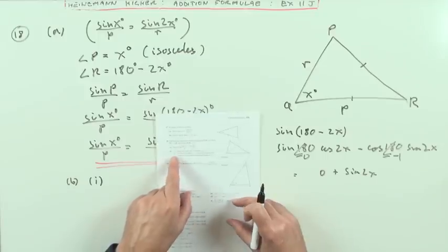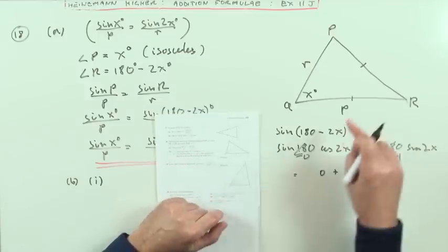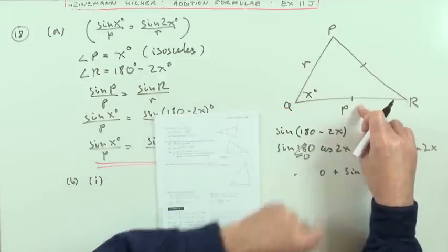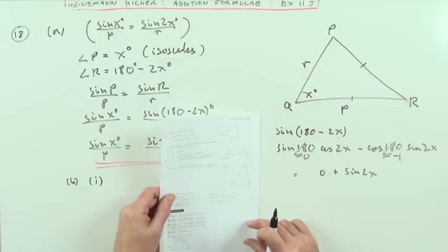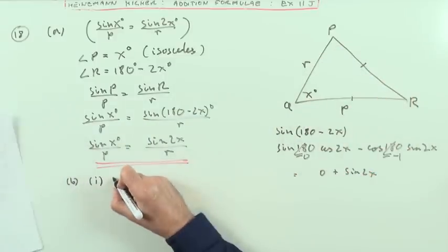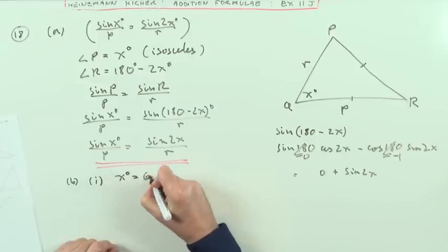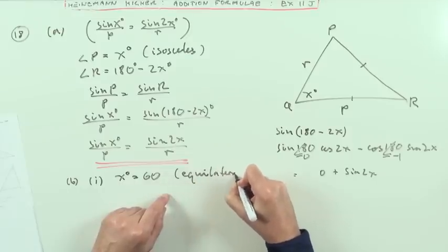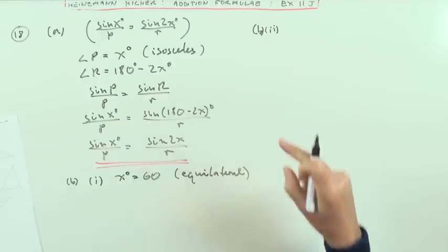Two marks here. State the value of X when P equals R. Now these two sides are the same. So if R is also the same as P, then all three sides are the same, in which case that triangle would have to be equilateral. So straight away, I know that X is going to be 60, because if P equals R, then I've got an equilateral triangle. I'll just put equilateral down as my reason.